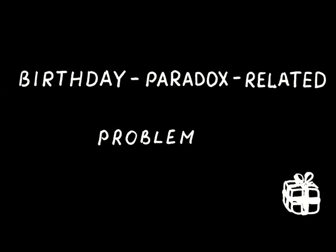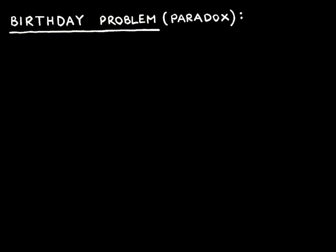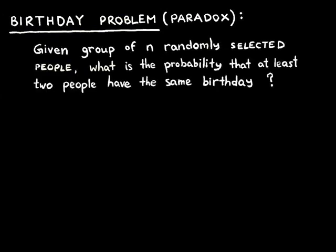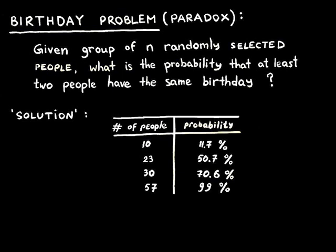Hello there. Let me remind you what the so-called birthday problem is about. Given a group of N randomly selected people, what is the probability that at least two people have the same birthday? Unexpectedly, it turns out that you need only 23 people for the probability to reach the 50% threshold. For a group of 57 people, the probability of a birthday match is nearly 99%.